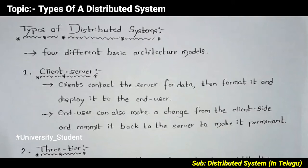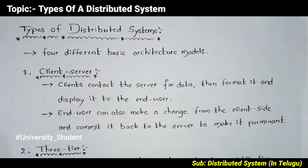Hi friends, welcome to another new class in Distributed Systems. We have some types of distributed systems. Here we have 4 different basic architecture models: client-server, 3-tier, n-tier, and peer-to-peer.